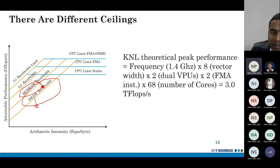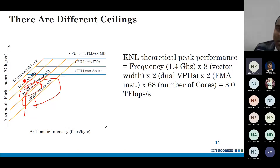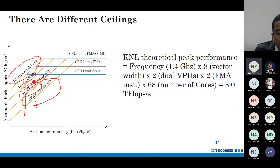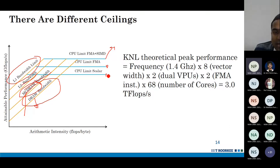If all the data is available in MCDRAM, this is your roofline model. If your data is all in L2, you have a higher roofline. If L1 cache is supplying all the data, you get an even higher effective roofline. And here again, this is your best case performance, this is performance without SIMD, and here without FMA as well.